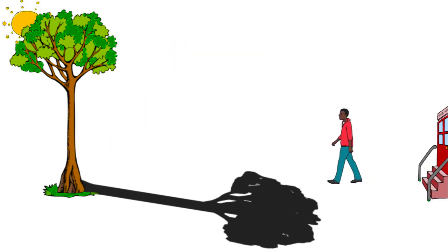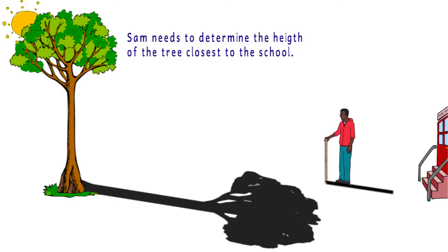Now, let's see if we can help out Sam. Sam needs to determine the height of the tree closest to the school. When he stood his yardstick perpendicular to the ground, he found that the shadow was 4 feet long. Then he measured the length of the tree's shadow, and it was 24 feet long. How tall is the tree?